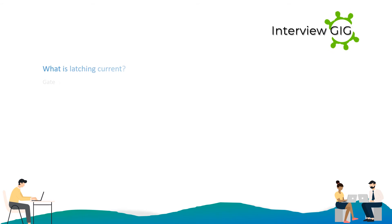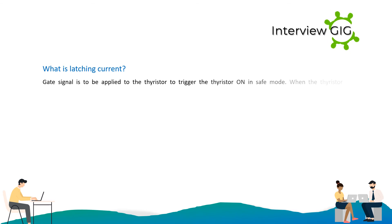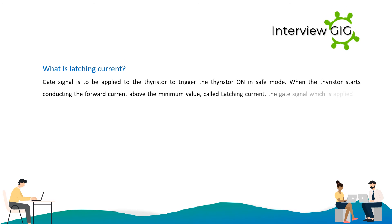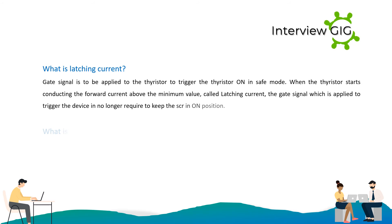What is latching current? A gate signal is applied to the thyristor to trigger it on in safe mode. When the thyristor starts conducting the forward current above the minimum value called latching current, the gate signal which was applied to trigger the device is no longer required to keep the SCR in the ON position.